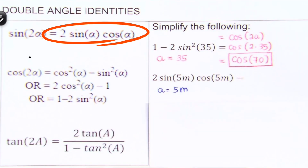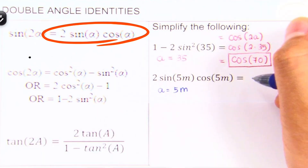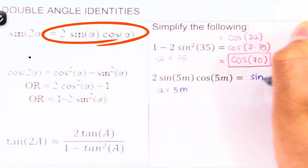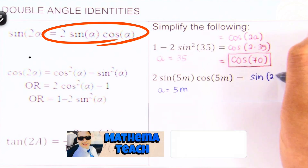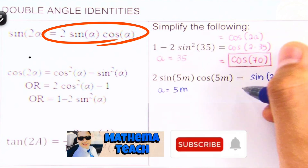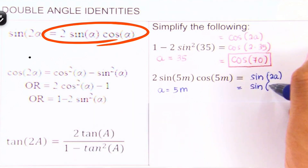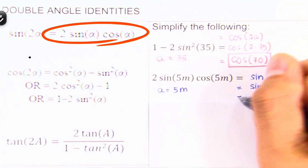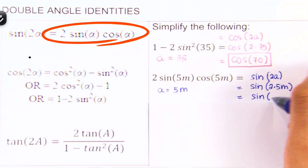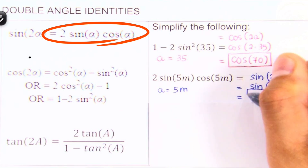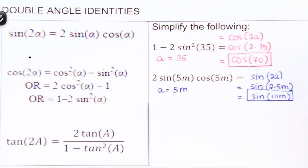This whole thing is equal to sine 2A. So we go ahead and set this equal to sine 2A. We remember that our A is 5M, so plugging it in, this comes out sine of 2 times 5M. Since 2 times 5M is 10M, the answer is sine of 10M.